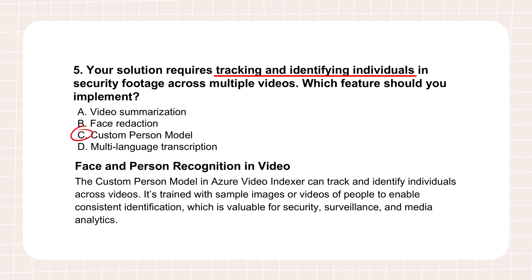The other options — video summarization, face redaction, multi-language transcription — are wrong here. Video summarization is about shortening the video; you lose the tracking. Face redaction is literally blurring faces for privacy — the opposite of identification. Multi-language transcription is about the audio track, not visually identifying people. The custom person model is the feature specifically designed for recognizing and tracking known individuals in video — a specialized tool for a specialized job.